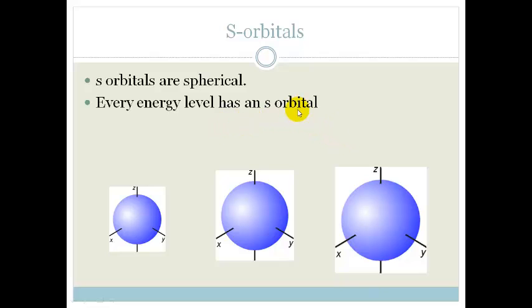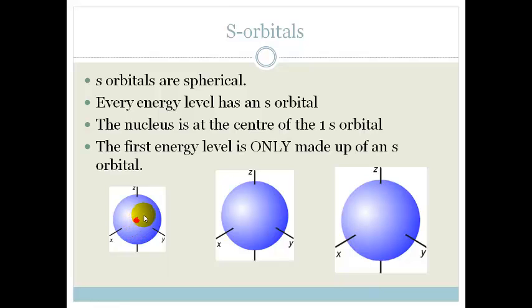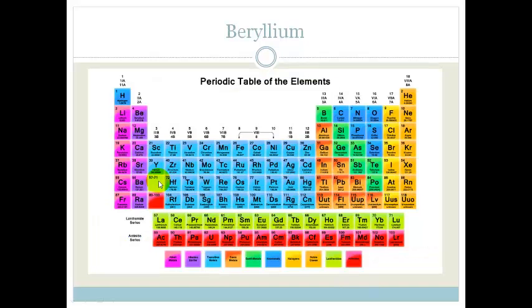Each energy level has an S orbital. This is the S orbital of the first energy level. This is the S orbital of the second energy level. And this is the S orbital of the third energy level. So, you can see that they are getting bigger and bigger as they go along. But every energy level has an S orbital. The nucleus is inside the center of the first S orbital, the 1S orbital. And the first energy level is only made up of an S orbital.